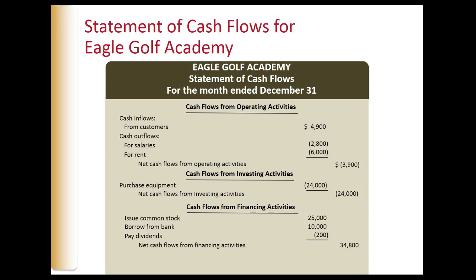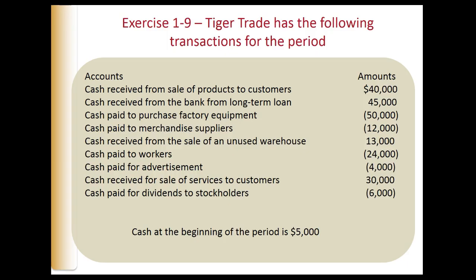In this example, the beginning balance of cash is zero because it was the first year of the company. The beginning balance of cash next year will be the ending balance of cash. Now let's do a problem and create a cash flow statement ourselves. Exercise 19 shows us that Tiger Trade has the following cash transactions: cash received from the sale of products to customers for $40,000, and cash received from the bank for a long-term loan of $45,000, and cash paid to purchase factory equipment of $50,000.